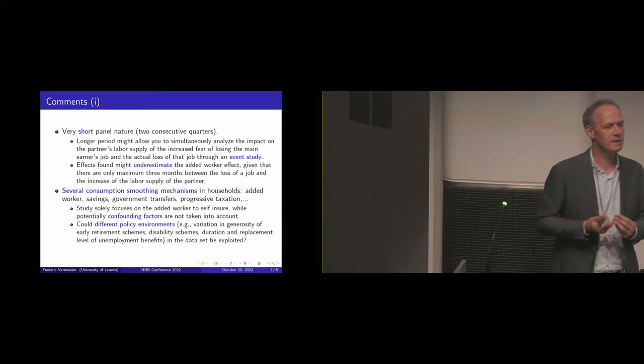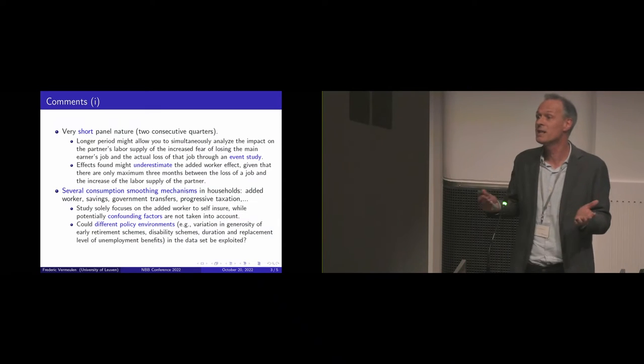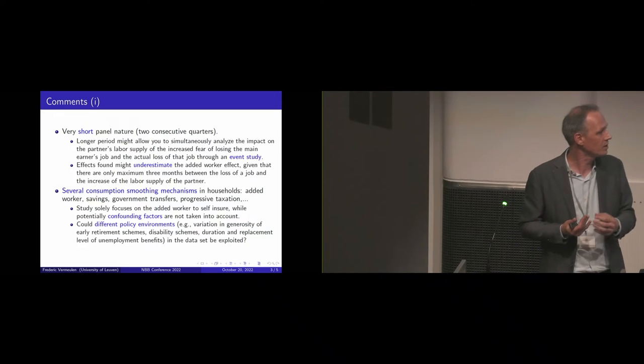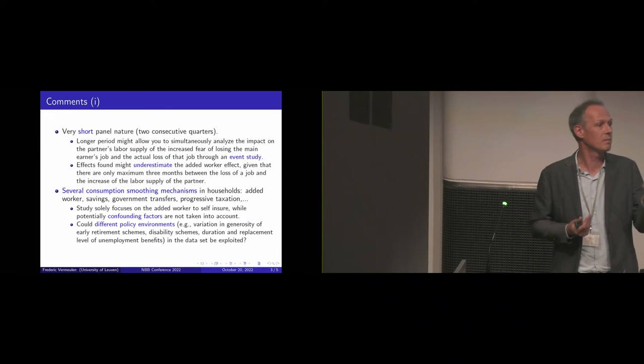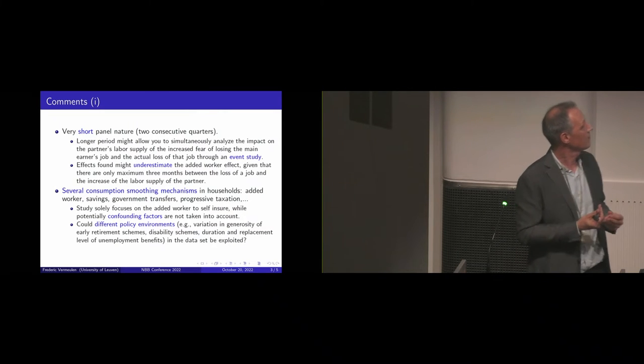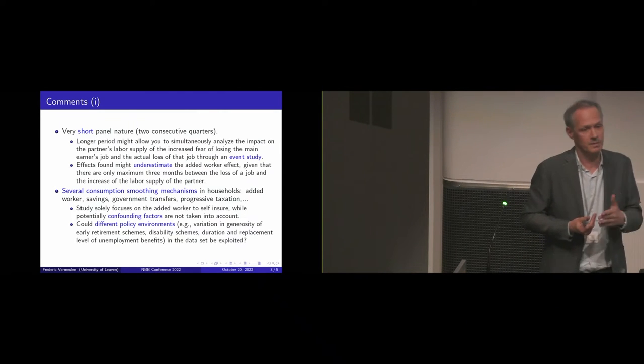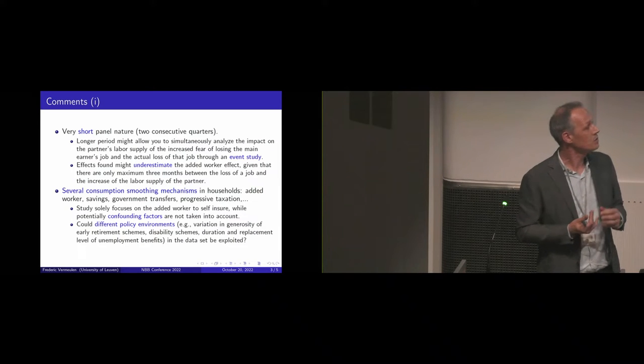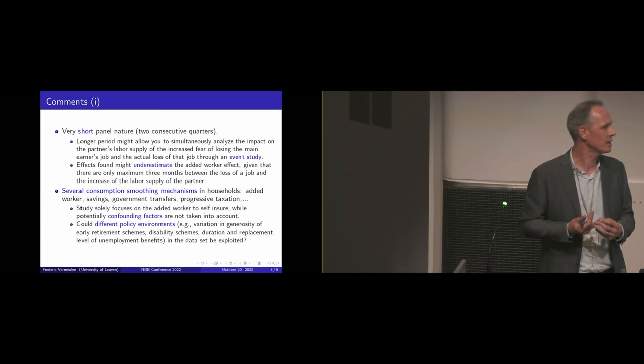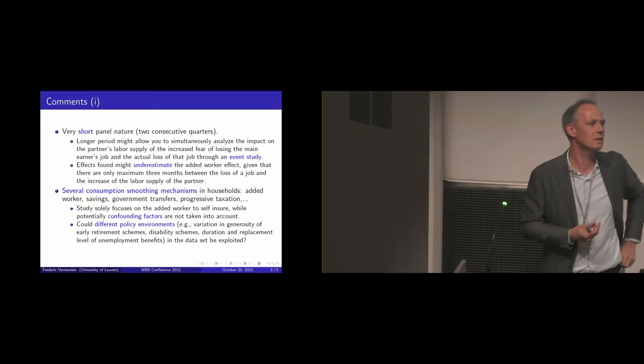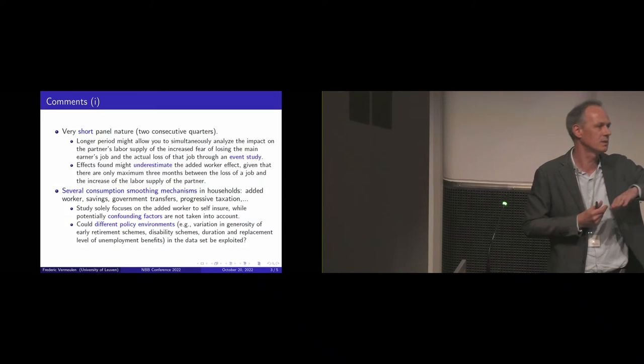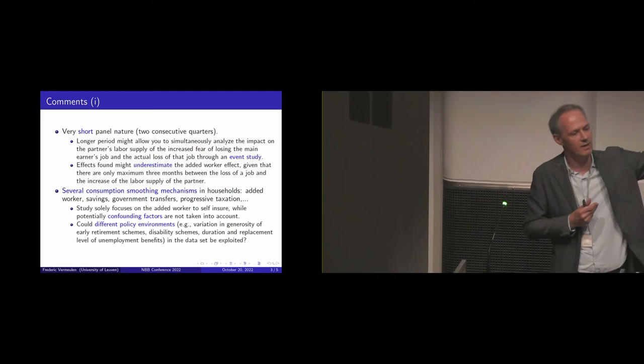Another possible criticism is that the added worker effect is one of the many smoothing mechanisms that are around. When there's a fear of a job loss or a job loss, people might start using their savings. Or there's also government transfers, for example, via unemployment benefits. Also the fact that income taxation is progressive, so that you have a concave tax schedule. This basically also implies a smoothing mechanism, because the consumption and the income does not behave linearly.